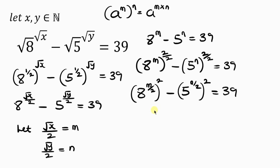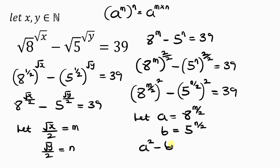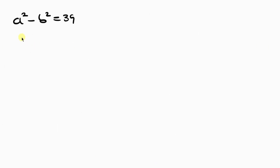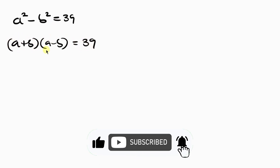To make this even simpler, let a equal 8 to the power of m over 2, and let b equal 5 to the power of n over 2. Substituting, we get a squared minus b squared equal to 39. This is the difference of two squares. Applying the difference of two squares formula: a plus b, times a minus b, equals 39. So we have two factors multiplying to give 39.